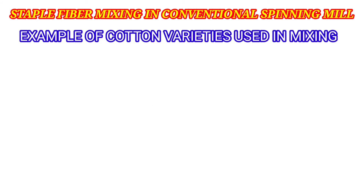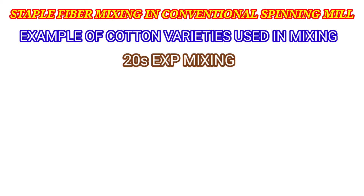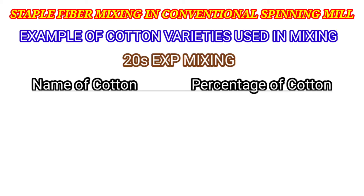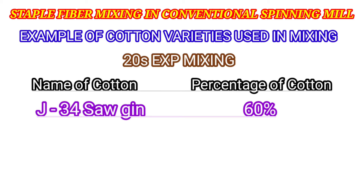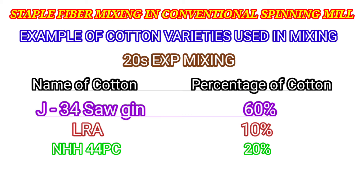Example of Cotton Varieties Used in Mixing. 20x Export Mixing includes the following cotton types by percentage: J34 Saugine Cotton 60%, LRA Brand 10%, NHS 44PC 20%, F14ST 10%.